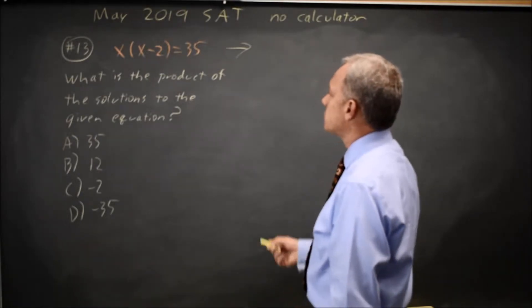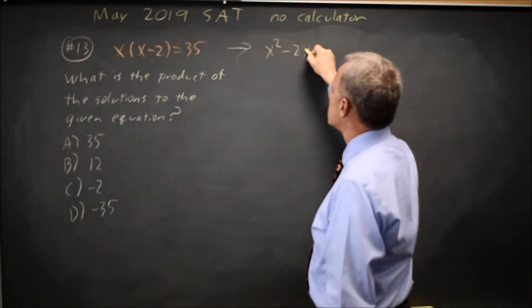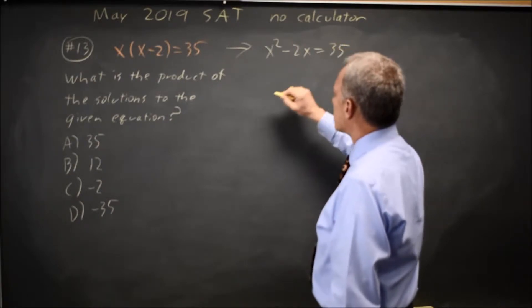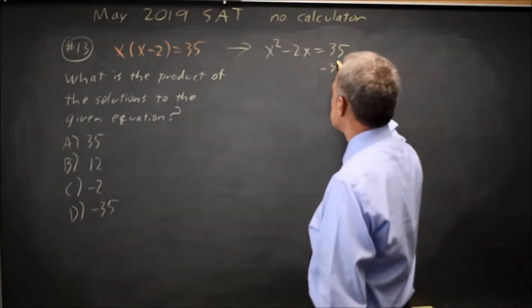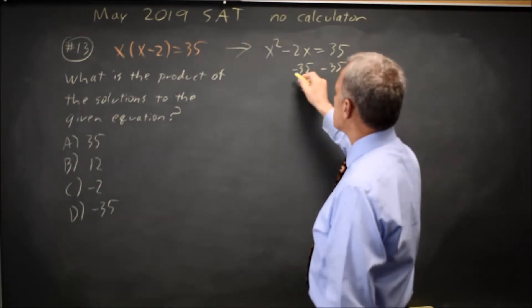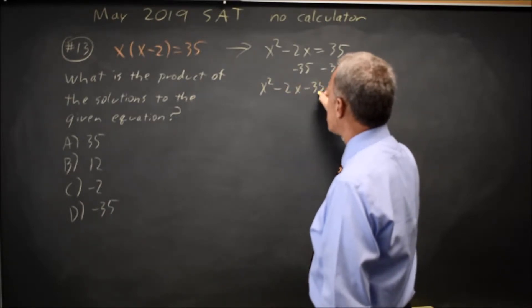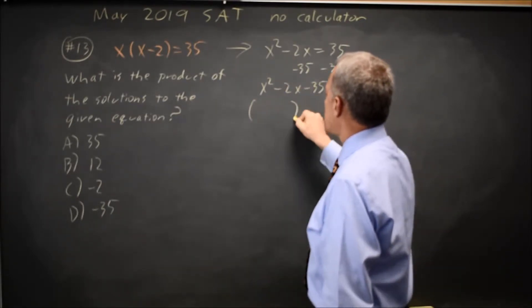There's two ways to do this. I'm going to do it by finding the solutions first, and then I'm going to recall something that we may have heard at some point. To find the solutions, I'm going to get everything on one side by subtracting 35 from both sides. That's x squared minus 2x minus 35 equals 0, and now I'll factor.